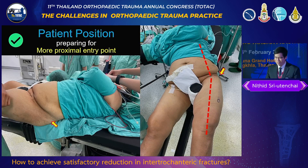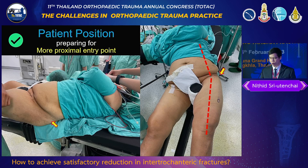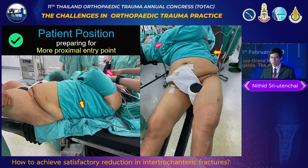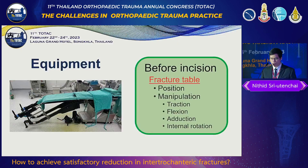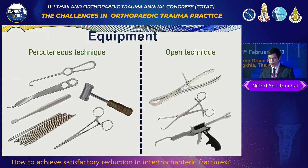Coming back to the case, I had two concerns at every step. First, the entry point would need to be more proximal than usual because of obesity. I always use a separate body strap and arm strap to create a clear entry point and to set the position in adduction. When the fracture table cannot provide satisfactory reduction, you should prepare intraoperative equipment for percutaneous or open reduction.